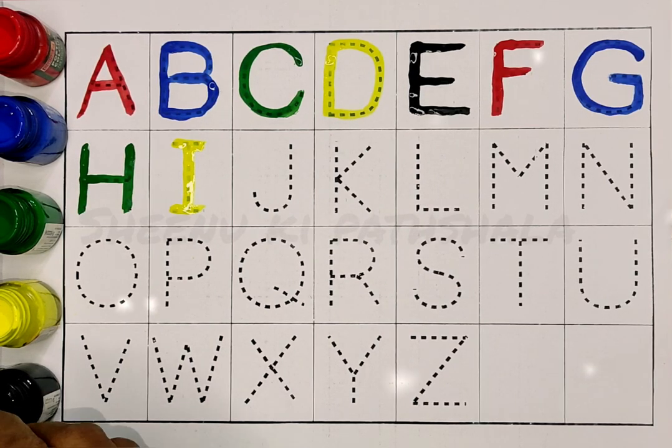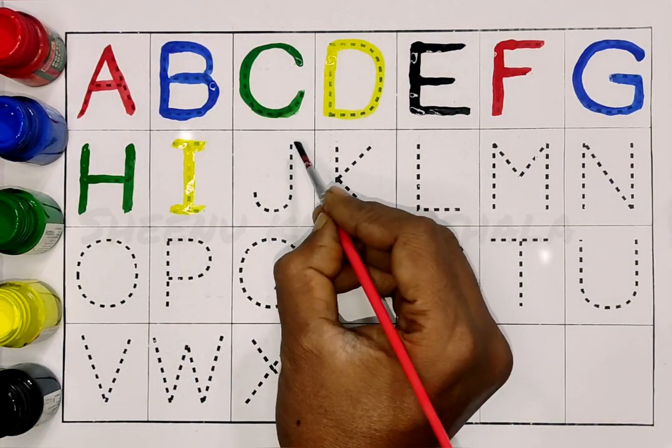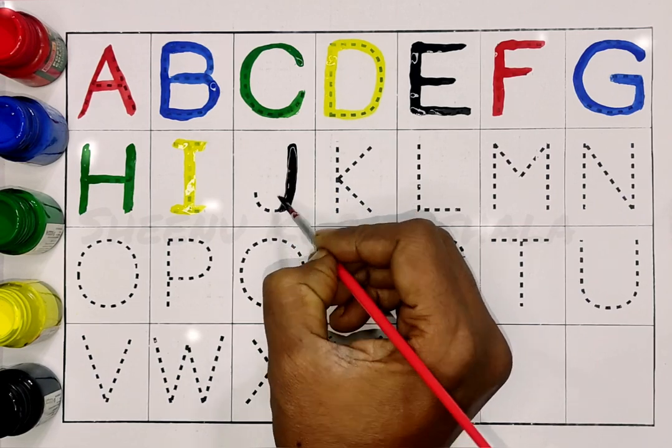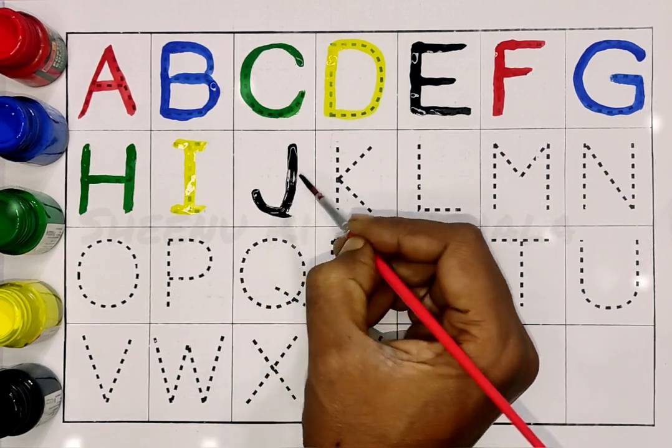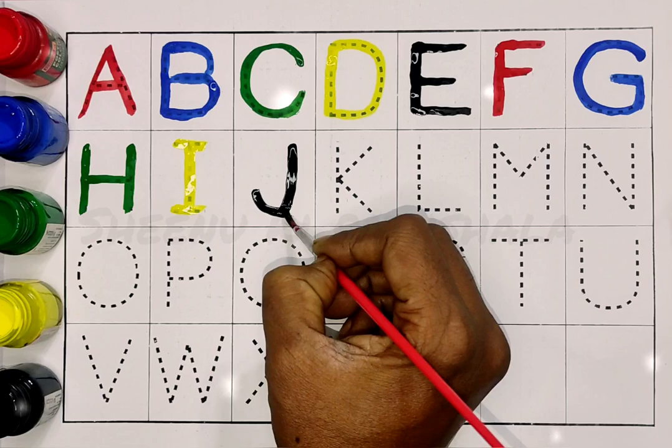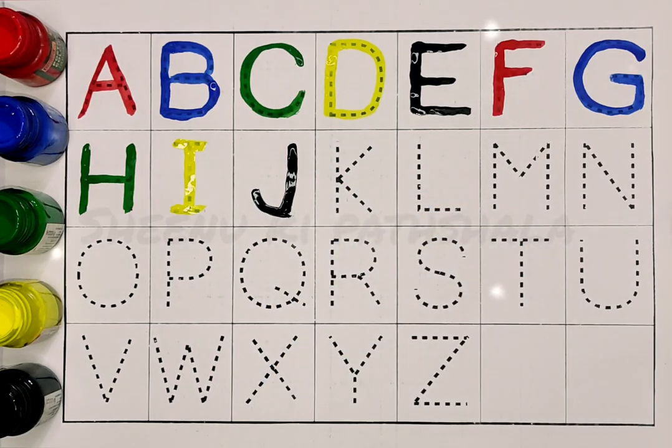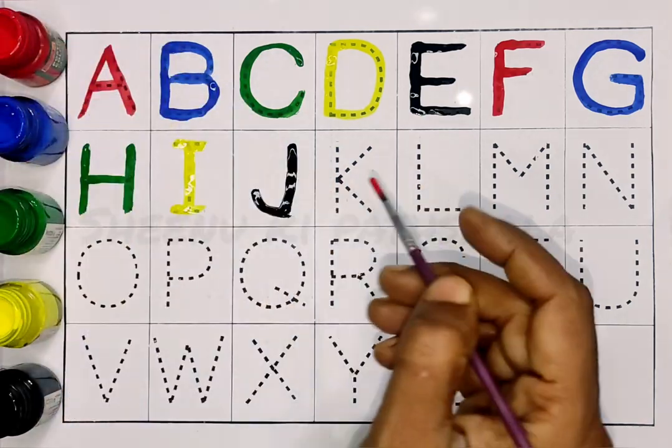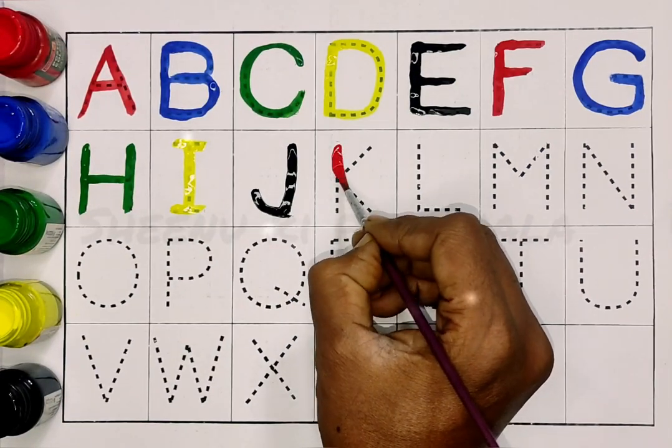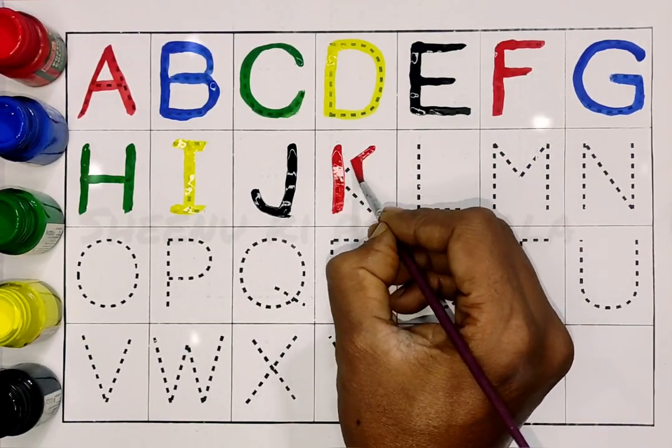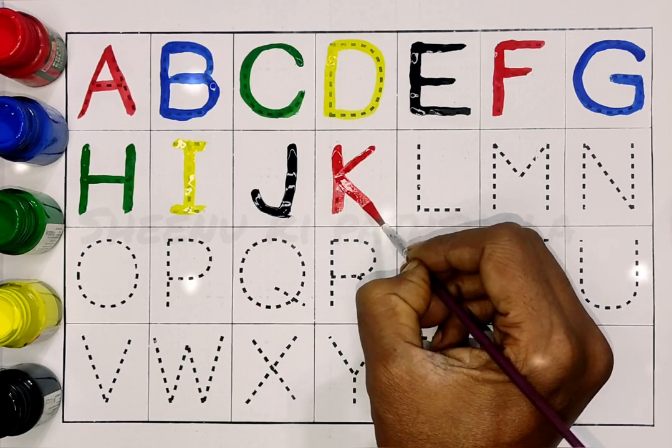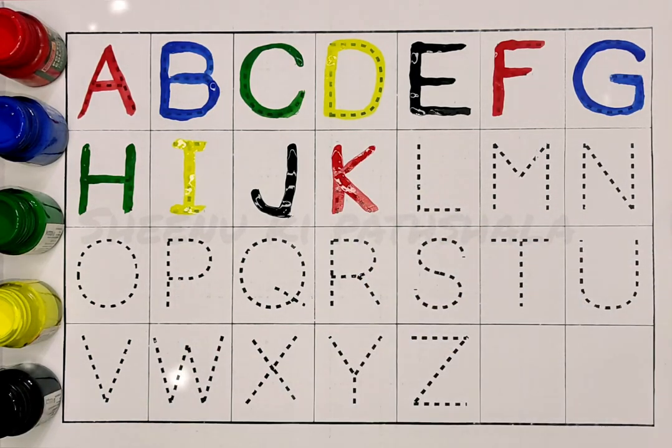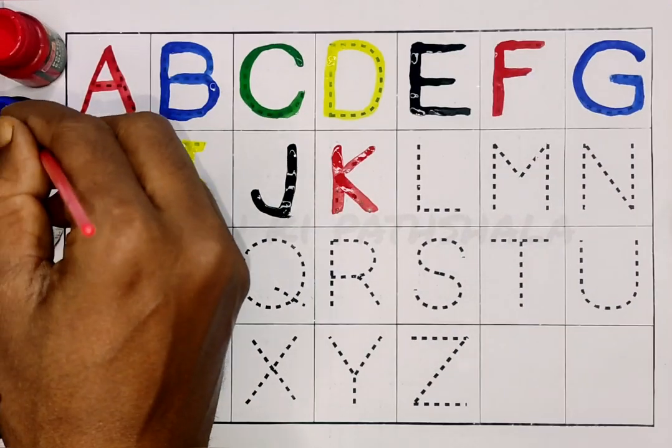Black color. J, J for jug. Red color. K, K for kite. Blue color.